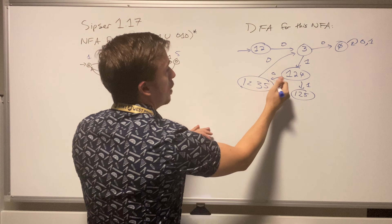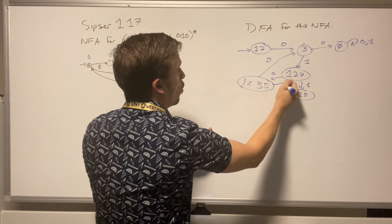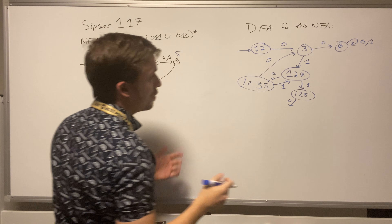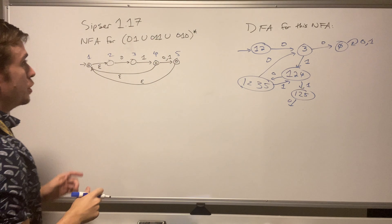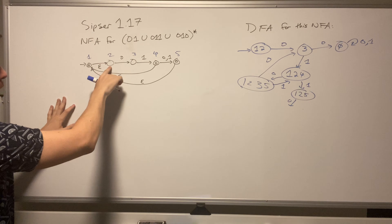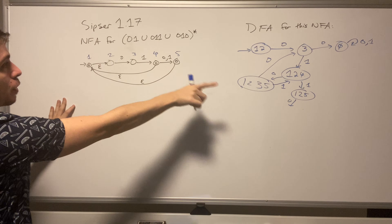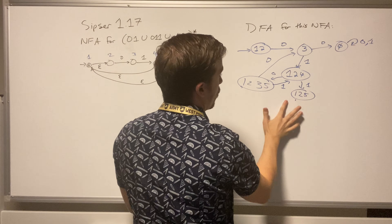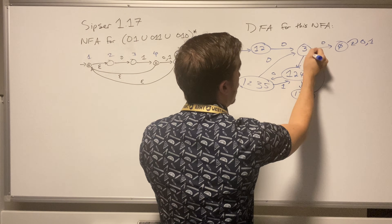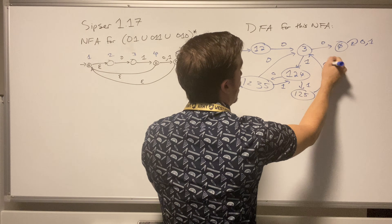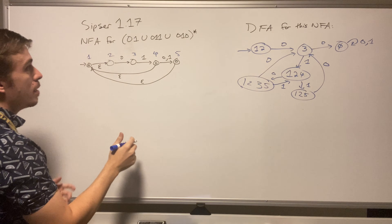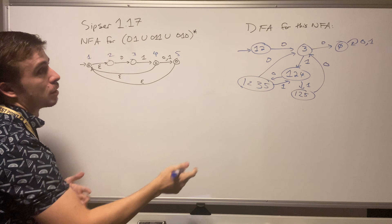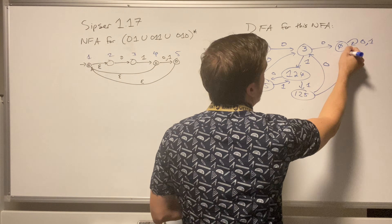From state one-two-five, on zero: state one goes nowhere, two goes to three, five goes nowhere — so I go back to three on zero. On a one transition, none of those states go anywhere, so I go to the empty set state.